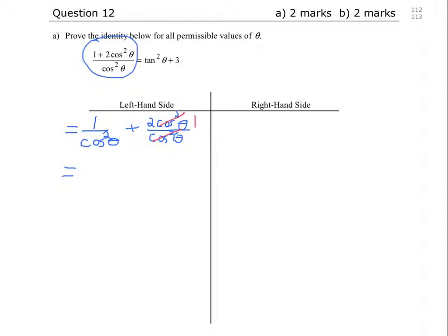And we could simplify 1 over cos squared theta. 1 over cos squared is secant squared. 1 over cos is secant, so 1 over cos squared is secant squared. All that's left is the 2.